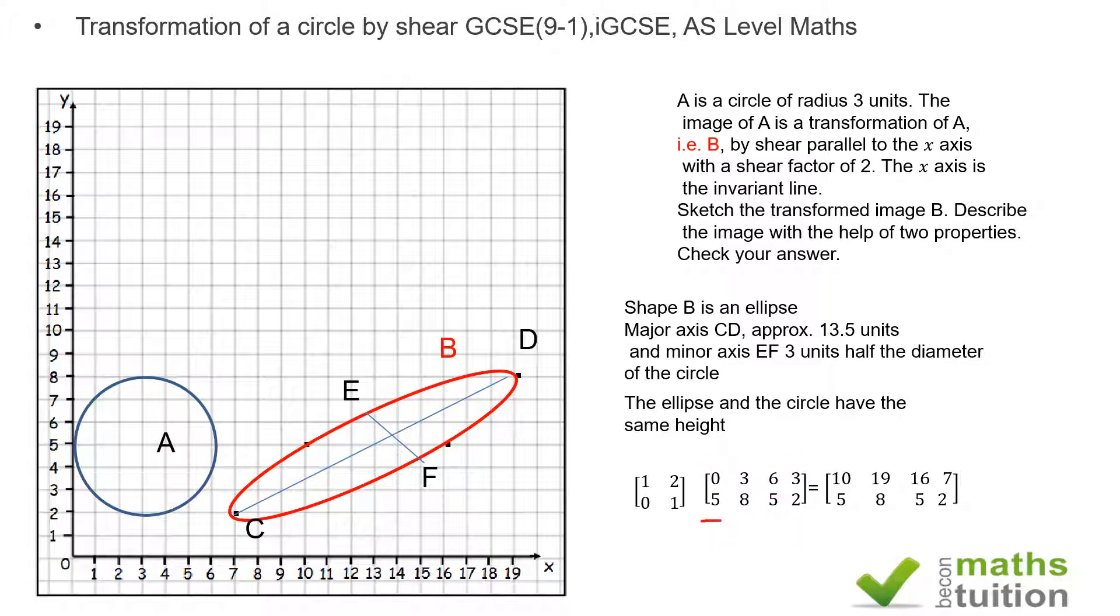This first point (0, 5) becomes (10, 5) because 1 times 0 is 0, 2 times 5 is 10, 10 plus 0 is 10. So that's right—that's the x-coordinate there. Because the x-axis is invariant, the y-values do not change; they remain the same.